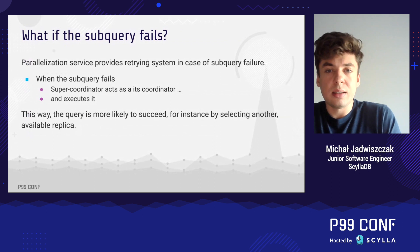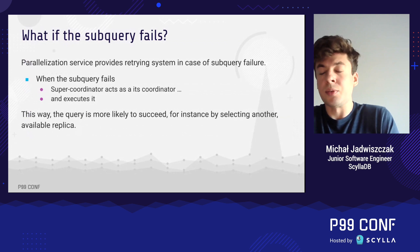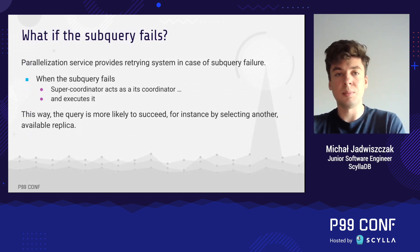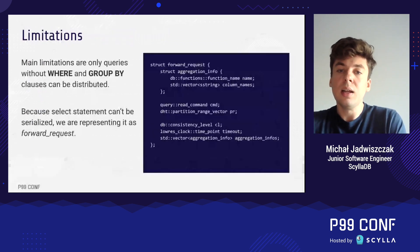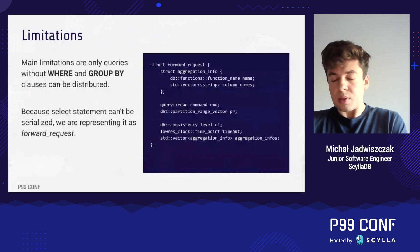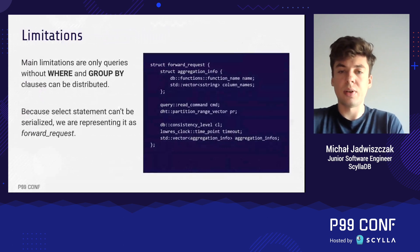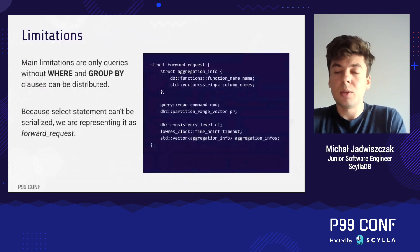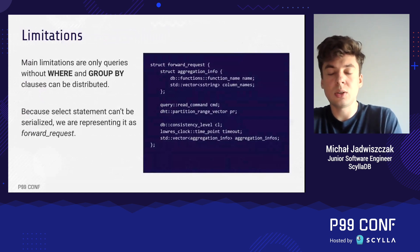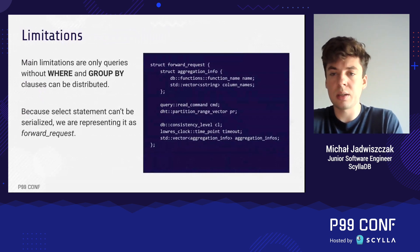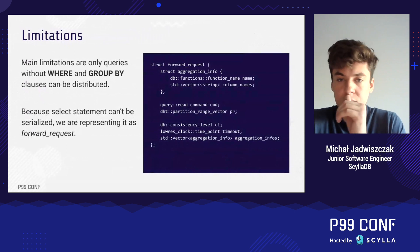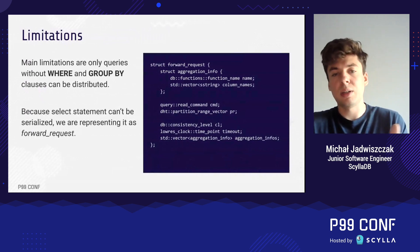In a distributed system there is always a possibility of failure. We have implemented a simple retry policy: in case of failure of any sub-query, it will be re-executed on the super coordinator, which may then choose a different replica instead of the originally selected one.